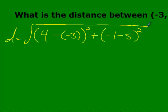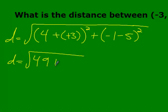The double negative becomes a positive. What's 4 plus 3? 7. What's 7 squared? 49. What's negative 1 take away 5? Negative 6. What's negative 6 quantity squared? 36.